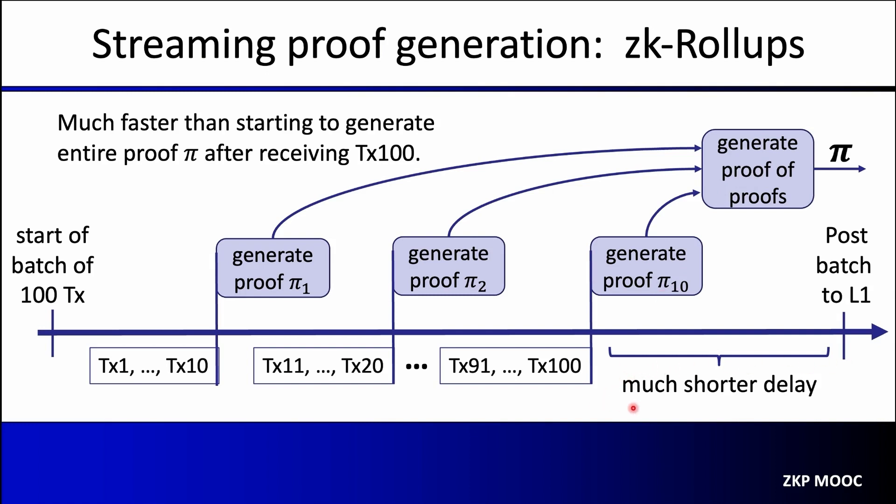The only thing we have to do after all hundred transactions are received is produce a proof for the last batch and a proof of proofs. Both of these operations are much faster than generating a monolithic proof for all transactions at once. We end up with a much shorter delay between the time the last transaction is received and when we can post things to layer one.